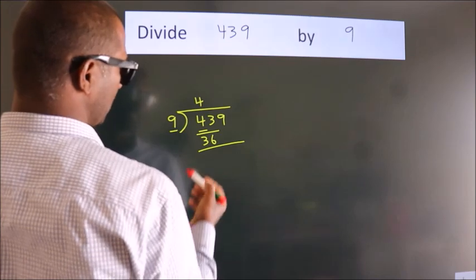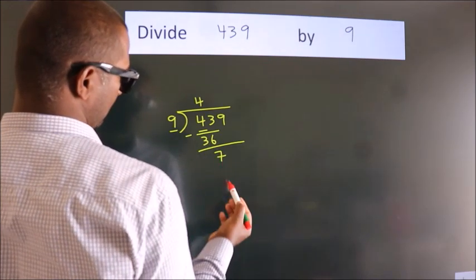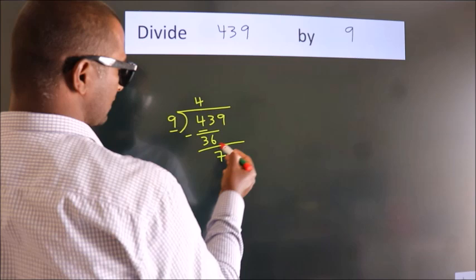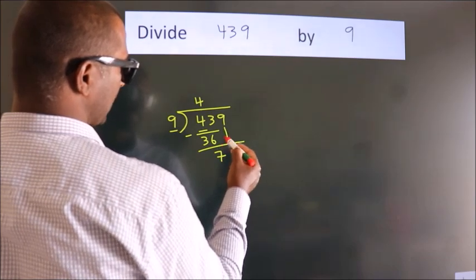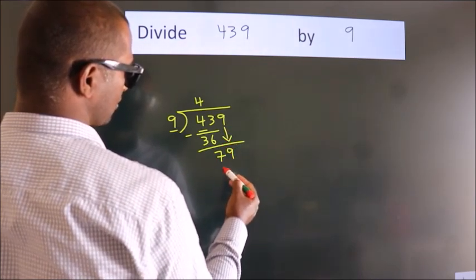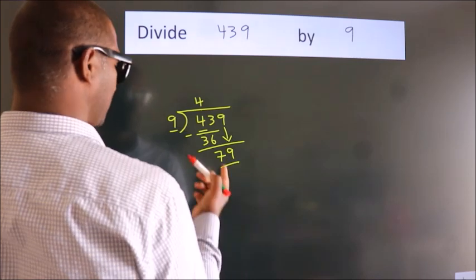Now we should subtract. We get 7. After this, bring down the next number, so 9 down. So 79.